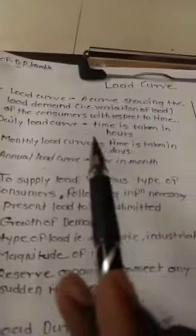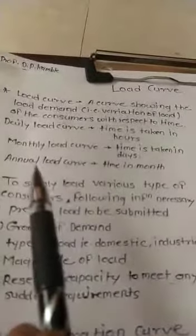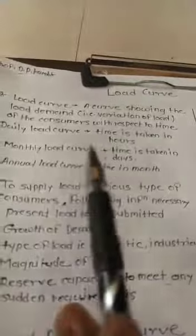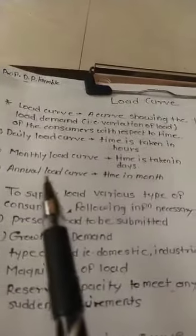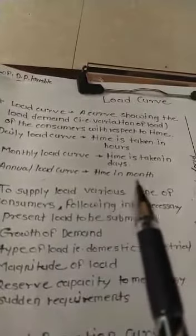There are three types of the load curve: daily load curve, monthly load curve, and annual load curve. In daily load curve, time is taken in hours and monthly load curve time is taken in days. And in annual load curve, time is taken in months.